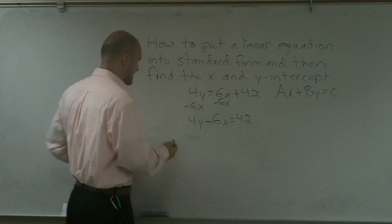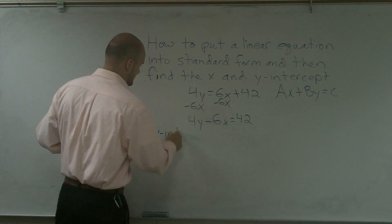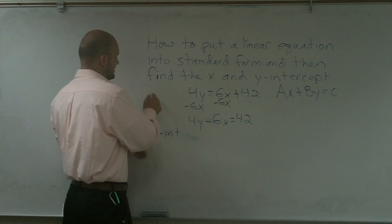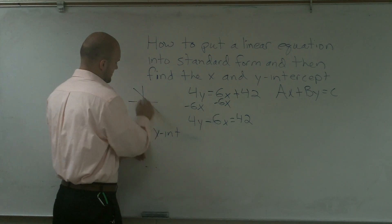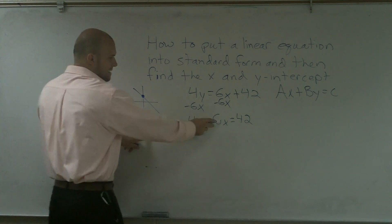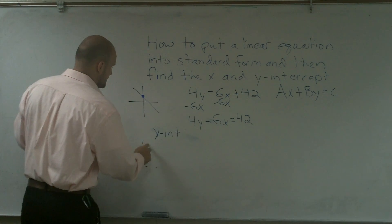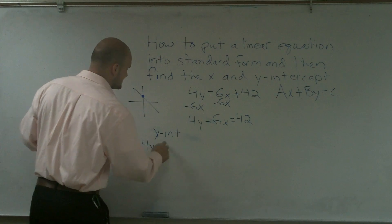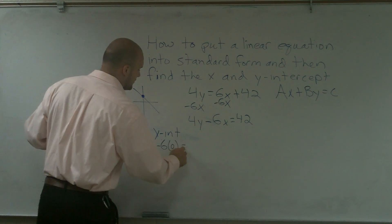So if I want to find the y intercept, remember the y intercept at that point I have an x value of 0. So at the y intercept I'm going to put a 0 in for x. So it would be 4y minus 6 times 0 equals 42.